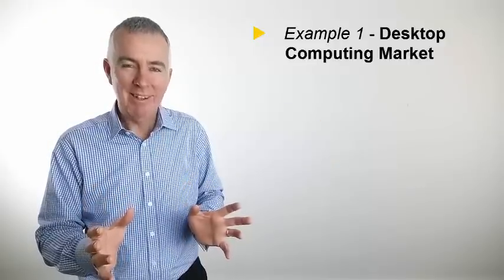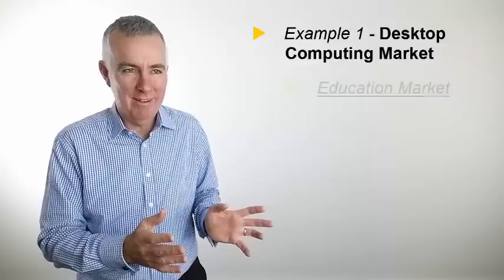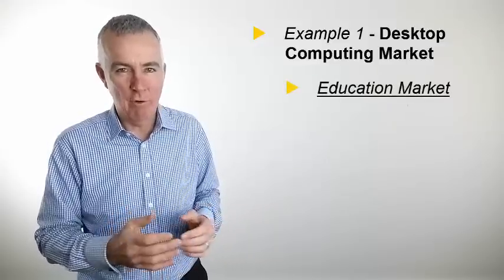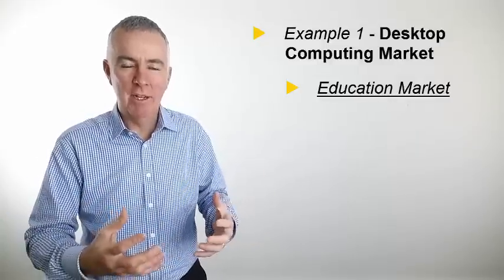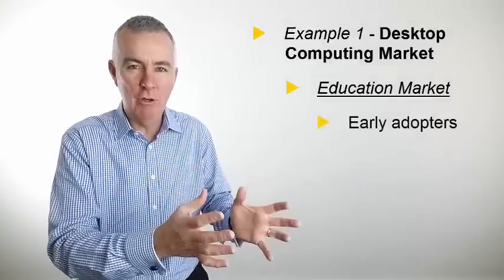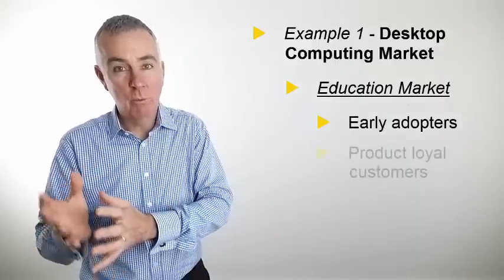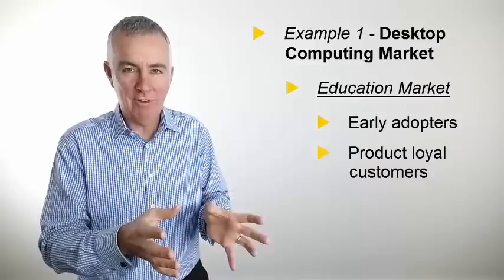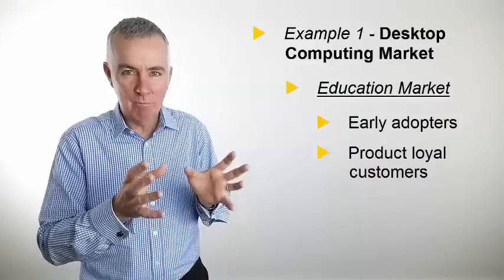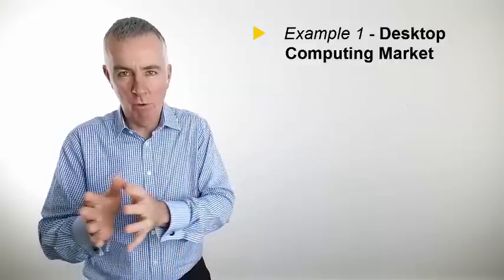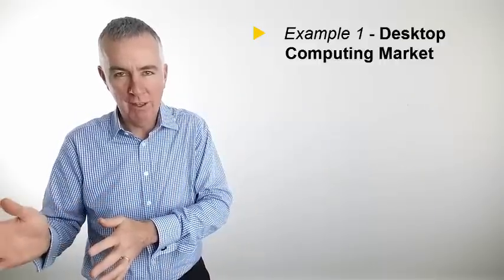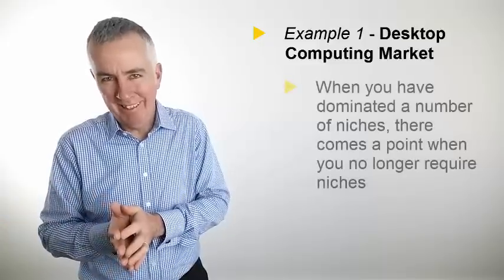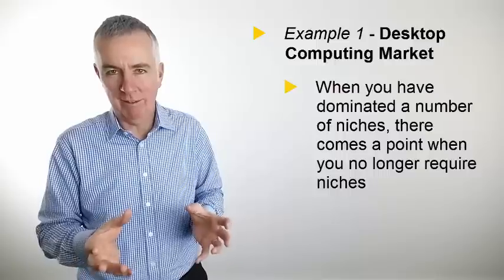Once we've dominated that market, then we can move on to another market. Let's say education. Why education? Well, again, it's a very good sort of trumpeting. It's a good market to create users early on and for them to want to stick with the product later on. So we pick a second niche. Work out what it needs to completely meet its needs. Provide that, dominate that market, and then move on to a third market, a fourth and a fifth. At some point, we've got so many niches that we don't really need niches anymore. Everybody's buying a product like this.